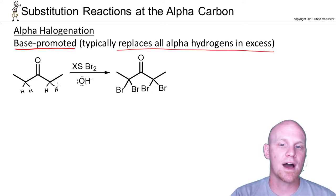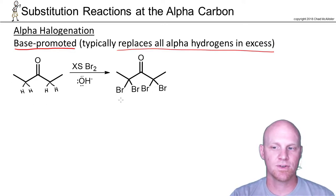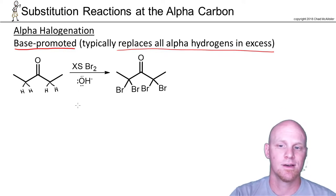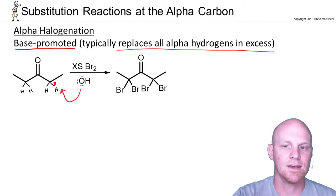And so in this case, we've got four alpha hydrogens. And we'll see the net result here is we can replace all four with bromines in this reaction. And the base we're going to use here is just simply hydroxide. And if you look at the mechanism, it's a simple two-step process. And the first step is you're simply going to deprotonate and form your enolate here.